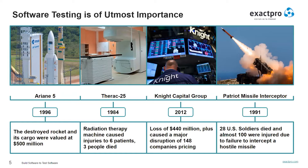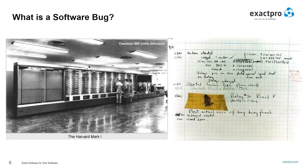So what is a bug? As you can see on the right picture, there was a little bug taped to the Mark 2 computer relay. Operators traced an error in the Mark 2 to a moth trapped in a relay and documented this case with the statement, 'first actual case of a bug being found.' That's how the term bug came to software testing.